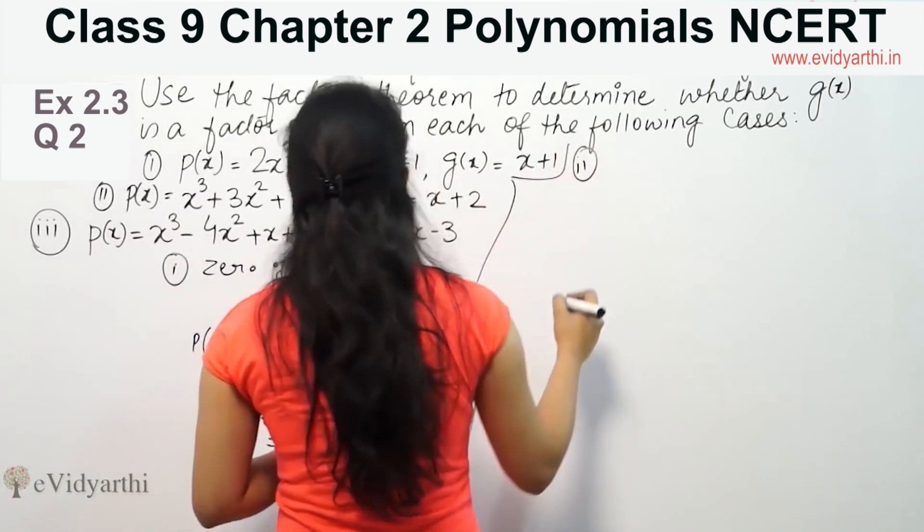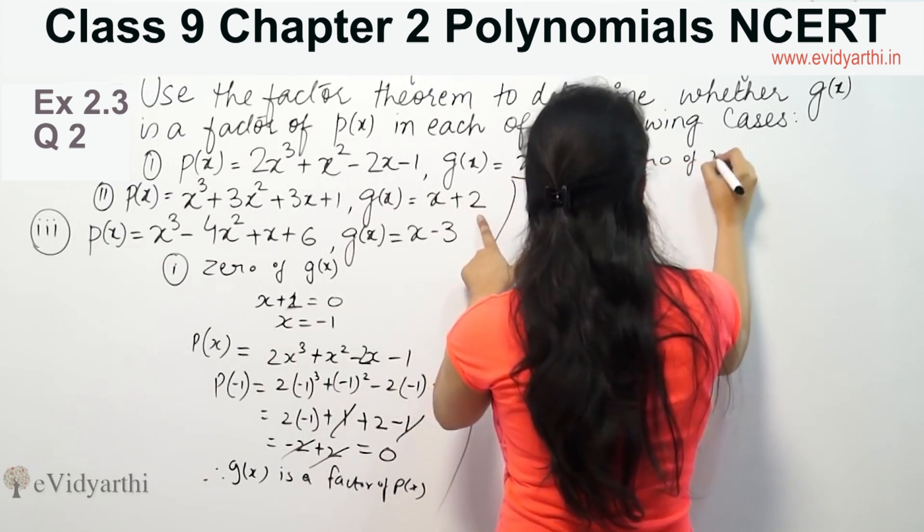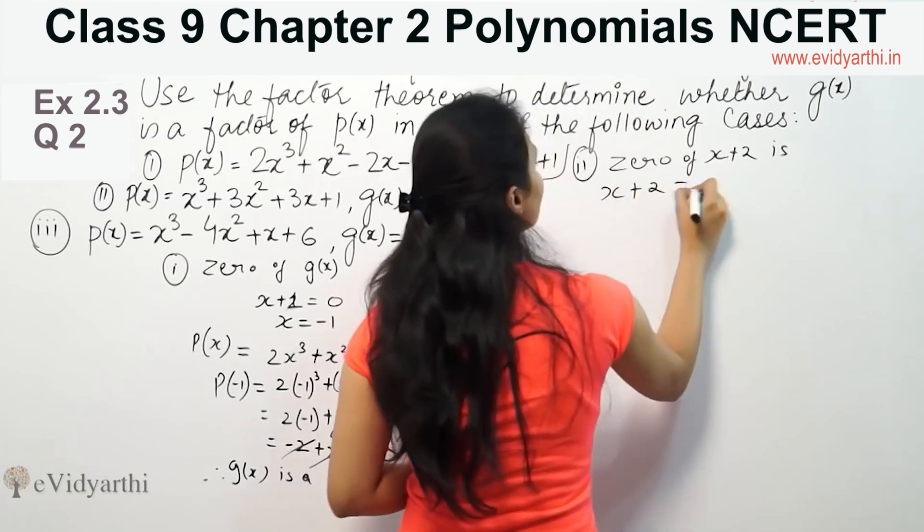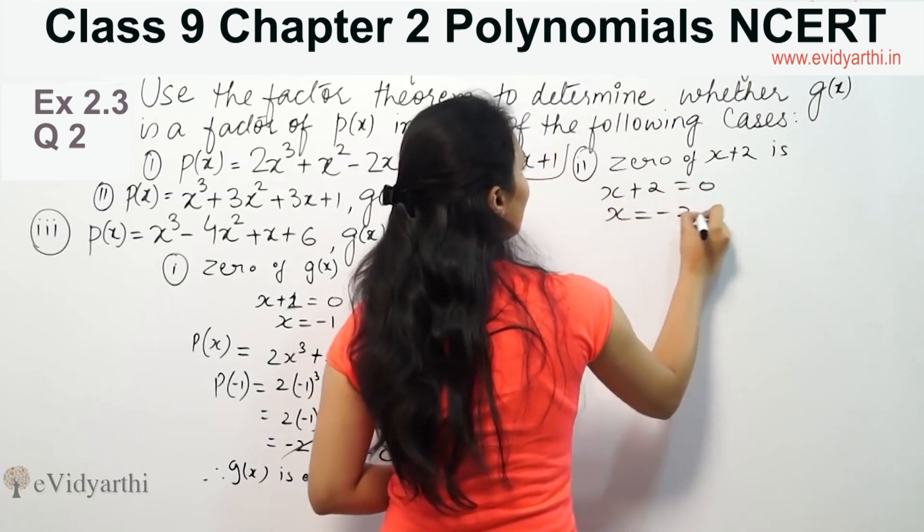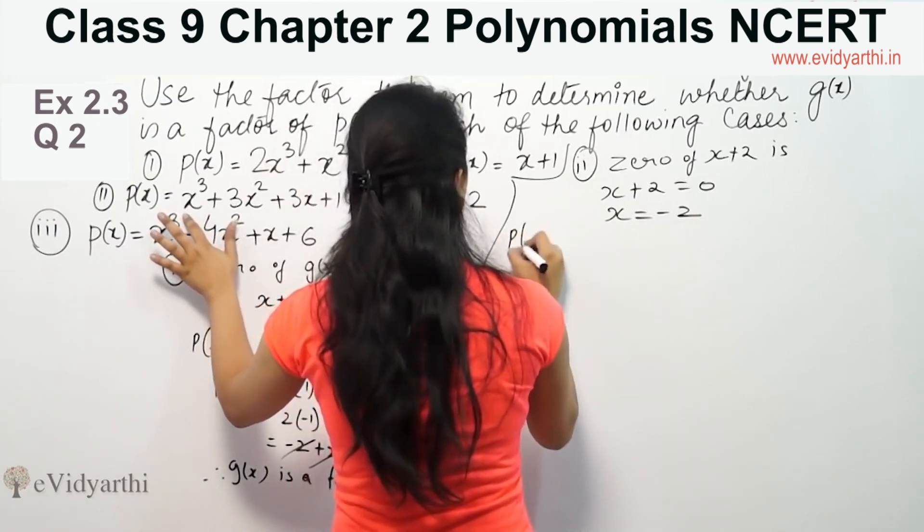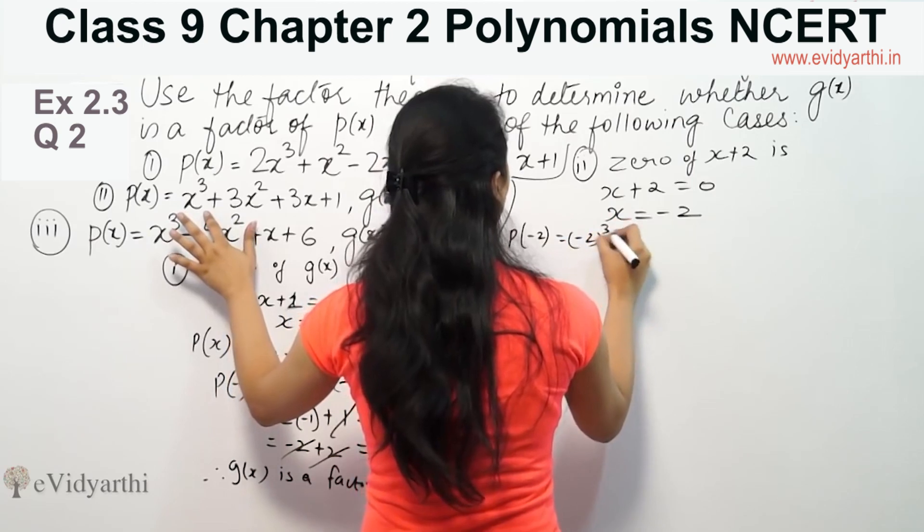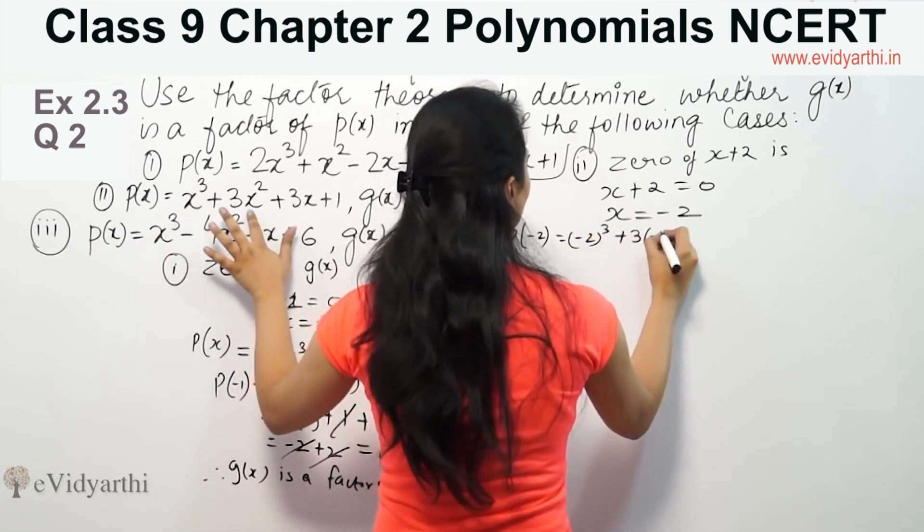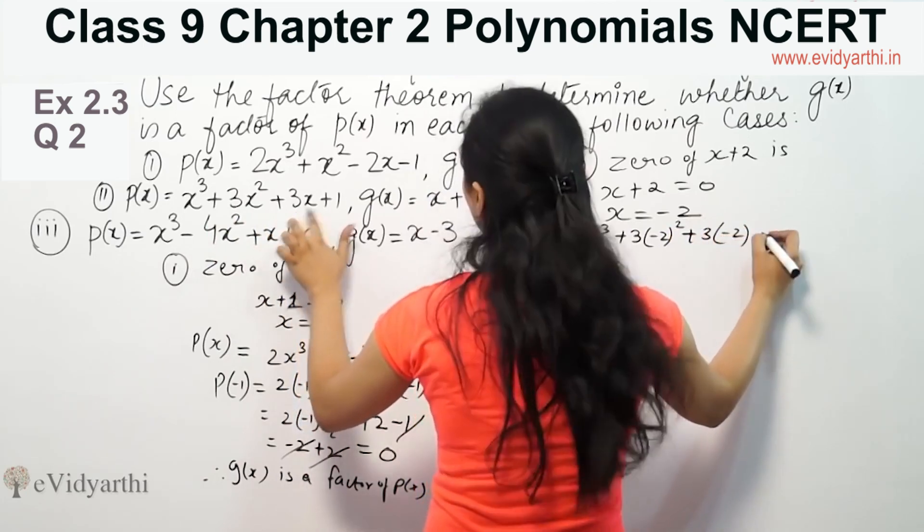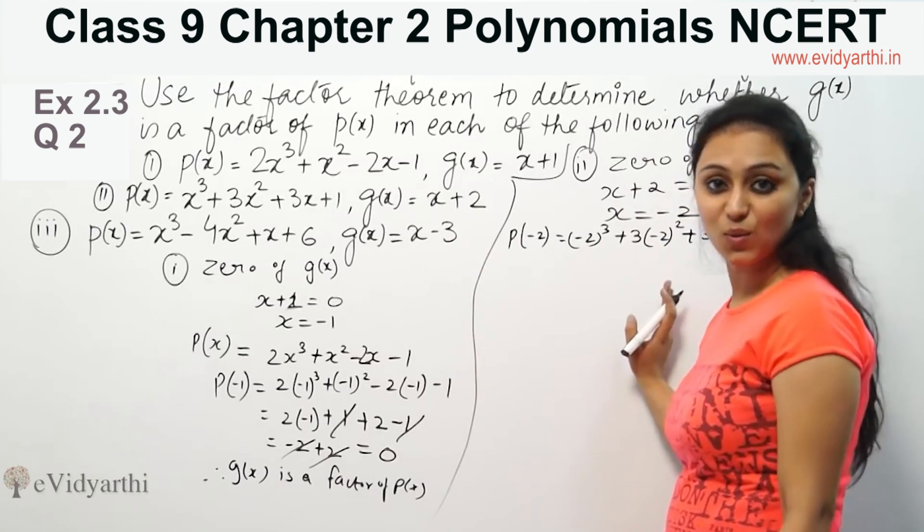Second part. We have g(x) equals x plus 2. So zero of x plus 2 is x plus 2 equals 0, that means x equals minus 2. This polynomial we will substitute. So this is p(-2): (-2)³ + 3(-2)² + 3(-2) + 1.